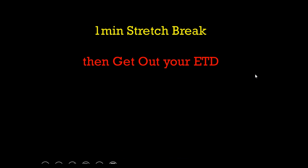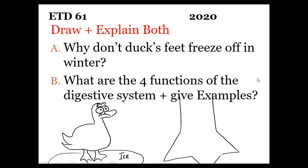Normally you'd get a stretch break. Instead, you're going to pause and go after ETD-61. Two questions: If you go to a pond in the dead of winter like in New York, you'll see ducks walking around on the ice — why don't you see frozen duck feet or legless ducks, since their feet should freeze off quickly? And what are the four main functions of the digestive system? Give an example. This should come right off GR41.